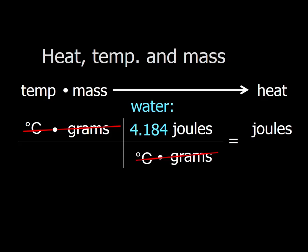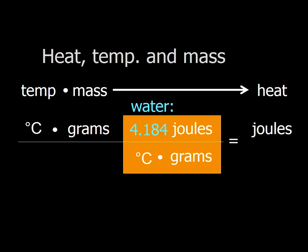So this value, this conversion factor, is known as specific heat. What it is, is the amount of heat in joules that you have to put into one gram of a substance to make its temperature go up one degree. So for water, it takes 4.184 joules to change the temperature of one gram of water by one degree Celsius.